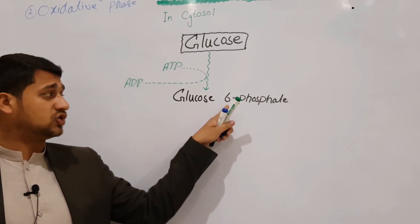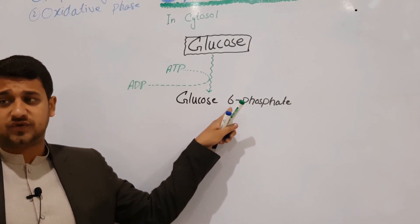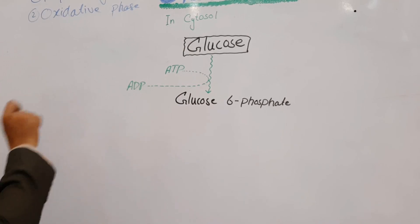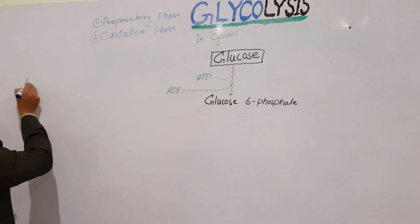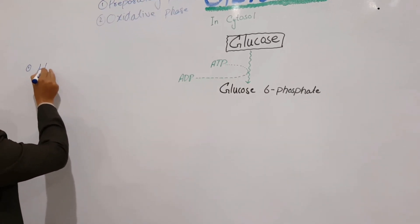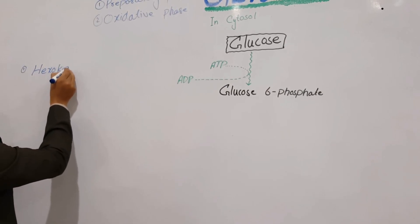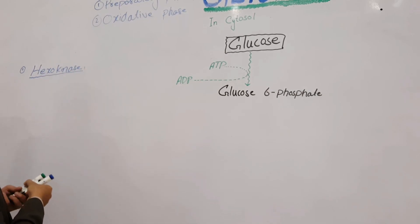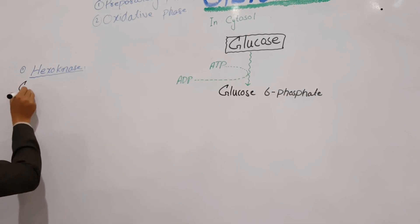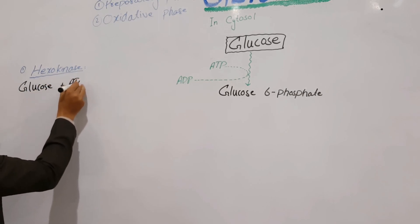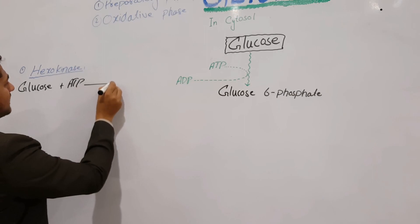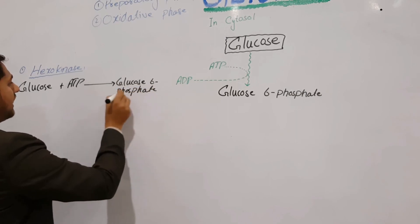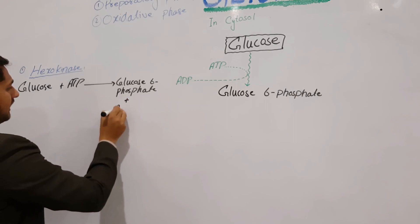The six indicates the position of the phosphate in the ring — phosphate is attached at carbon number six. The enzyme used in step one is called hexokinase — 'hexo' means six carbons, and glucose contains six carbons. The reaction is: glucose + ATP → glucose-6-phosphate + ADP.